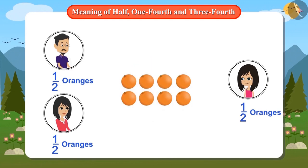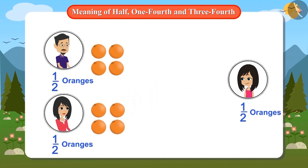We have a total of eight oranges. Four oranges is half of eight oranges. Let's give four oranges to papa and four oranges to mummy. But hey, what's this? There are no oranges left for Neha. Why did this happen?